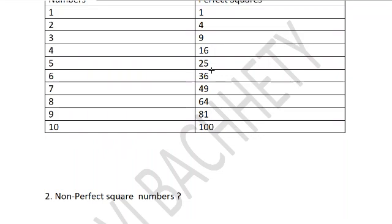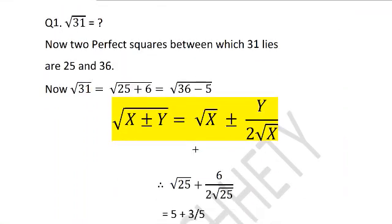So what you need to do is just see two perfect square numbers, one which is less than the given number that is 31, and one perfect square number which is just greater than this number.